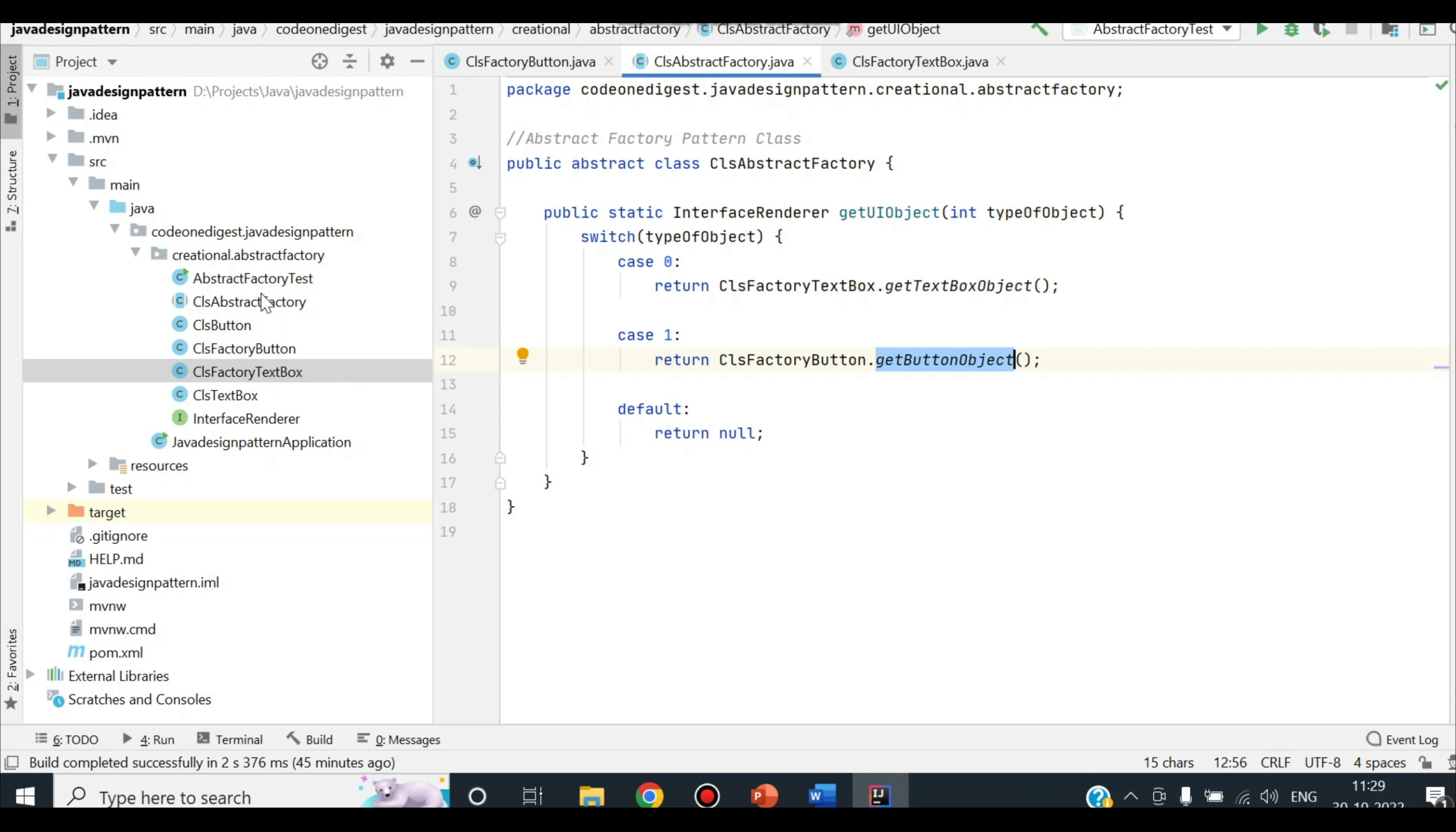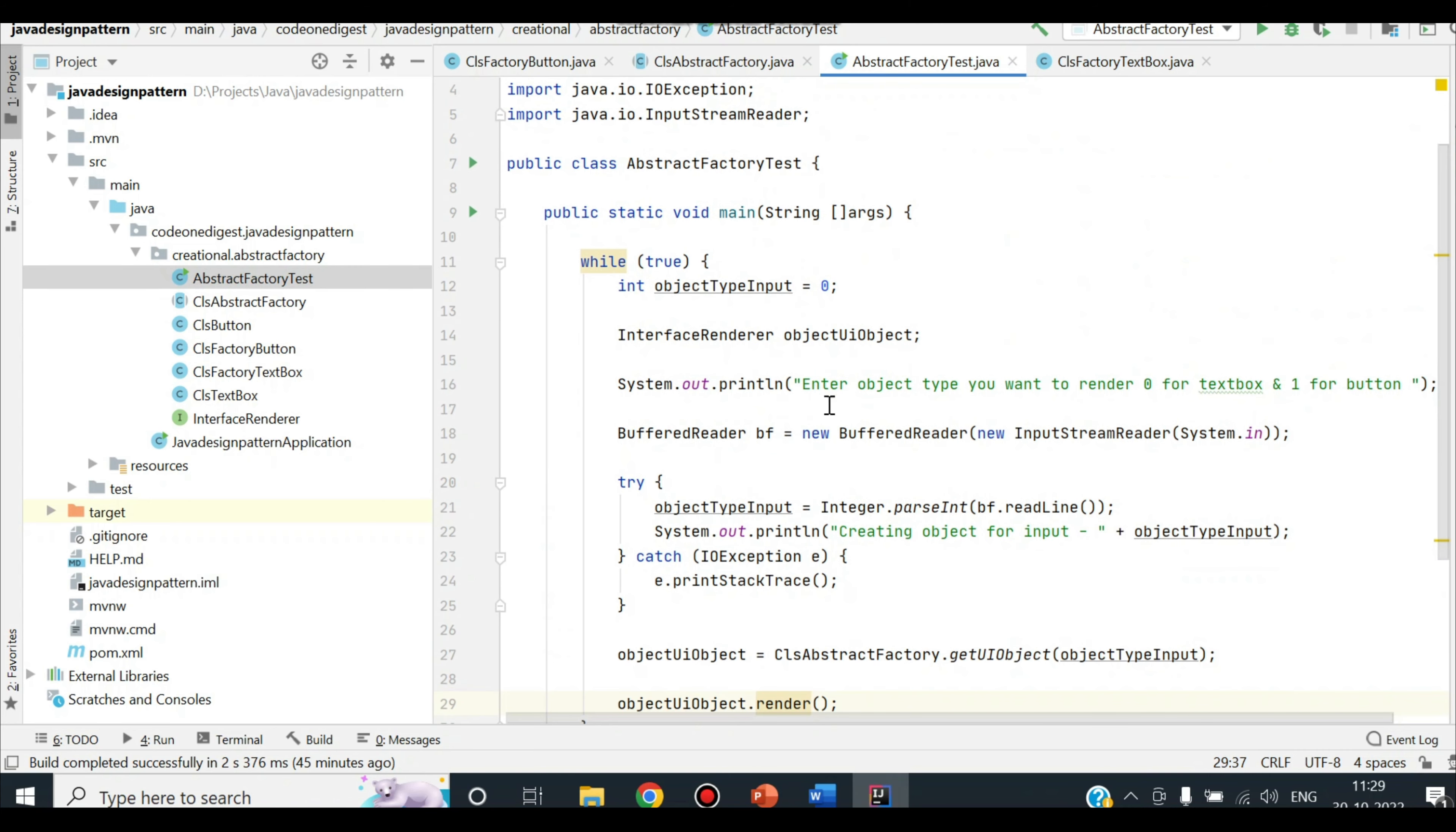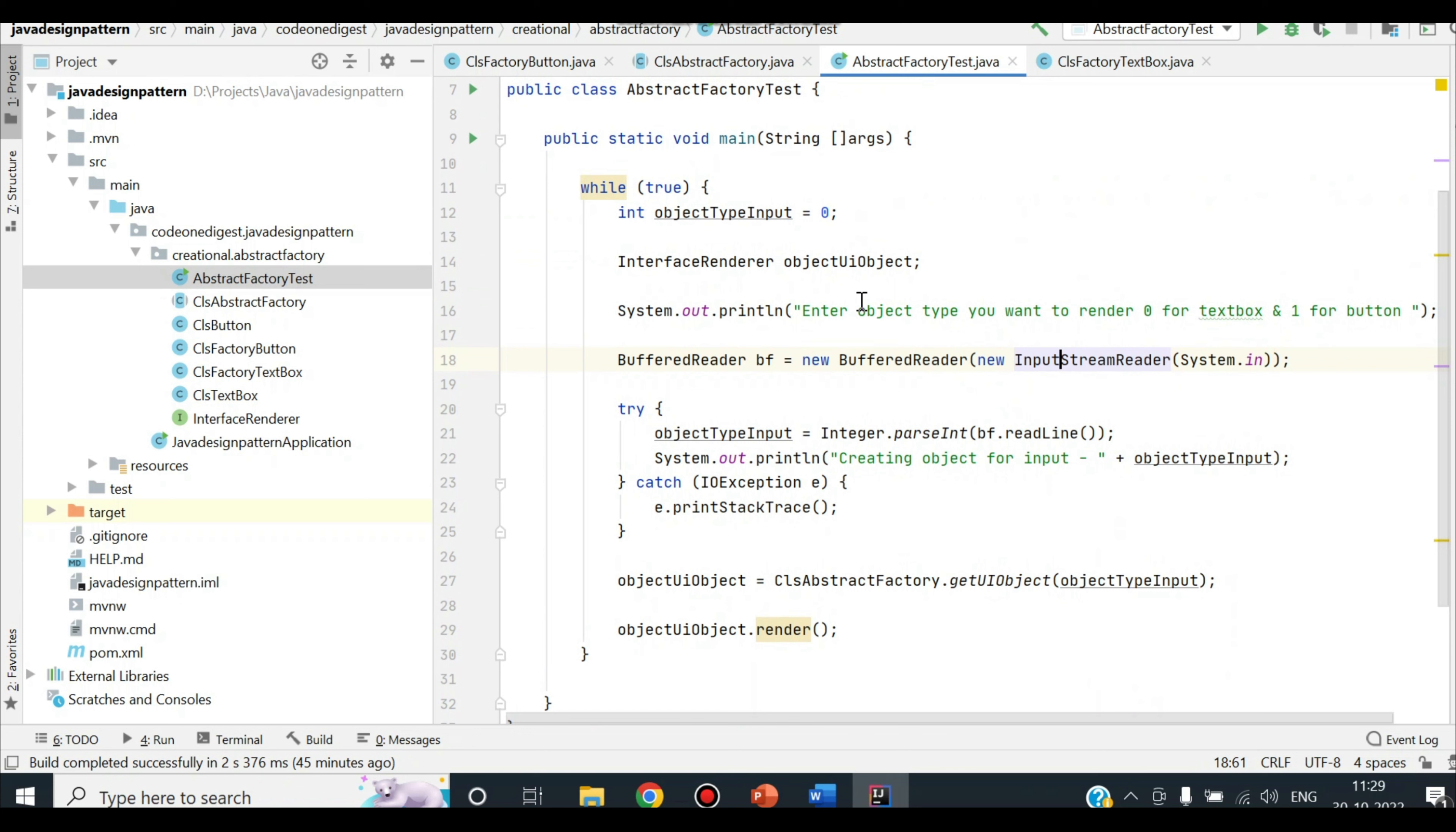Apart from that we have written this test class. So here what we are doing is we are reading the input from console and we are initializing an object of this interface. This object has been initialized using the abstract factory get UI object. So this is an object of interface renderer and this is the factory class. Our abstract factory class and we are calling this method get UI object by passing the user provided input. And then we are rendering it.